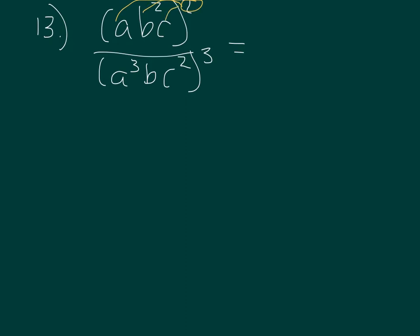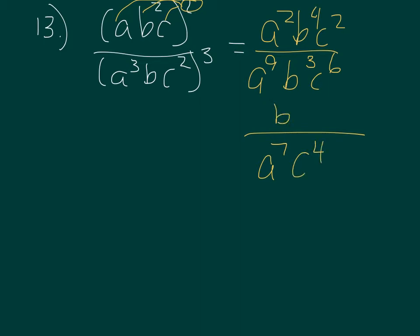Moving on. 13 gives me abc squared all squared over a to the third bc squared all to the third. We distribute that exponent, multiplying if I need to. So now I have a squared b to the fourth c squared all over a to the ninth b to the third c to the sixth. I get a2, a9, so I'm left with a7 in the bottom. I get b4 up top and b3, which leaves me a b up top. And then my c's are going to be c to the fourth down below.